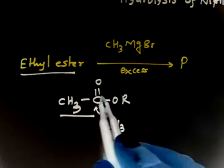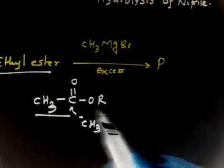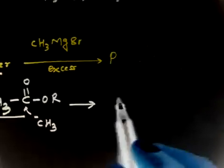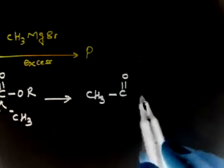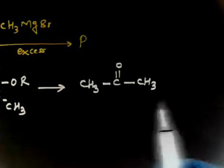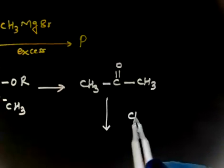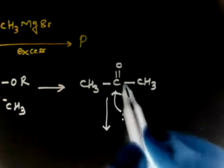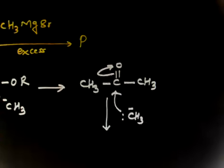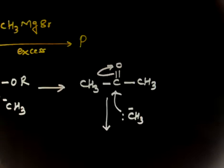This opens up, returns back, this goes. So finally I will have CH3-C double bond O-CH3. Now in the next step, CH3 minus can again attack as a nucleophile. So this attacks here and this goes here.